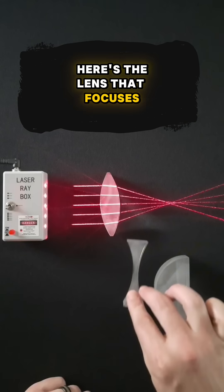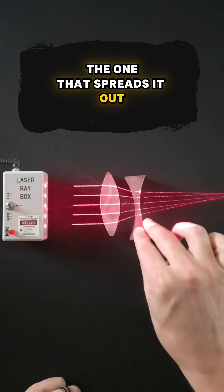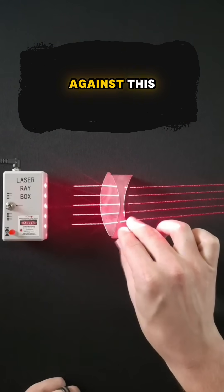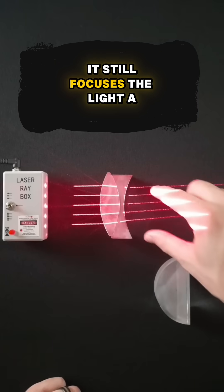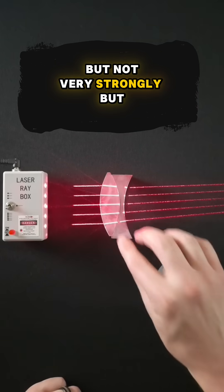Here's the lens that focuses light down, the one that spreads it out. If you get it right up against this, they almost cancel each other out. It still focuses the light a little bit, but not very strongly.